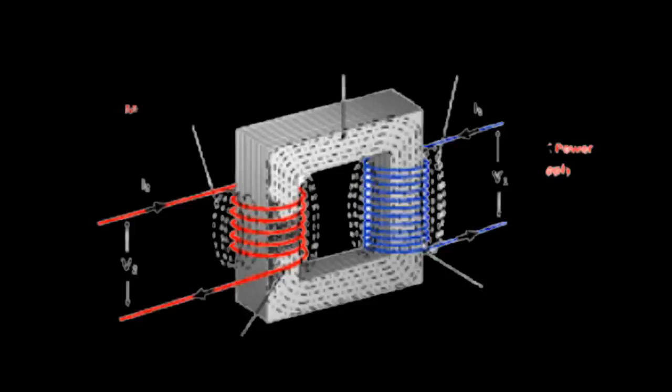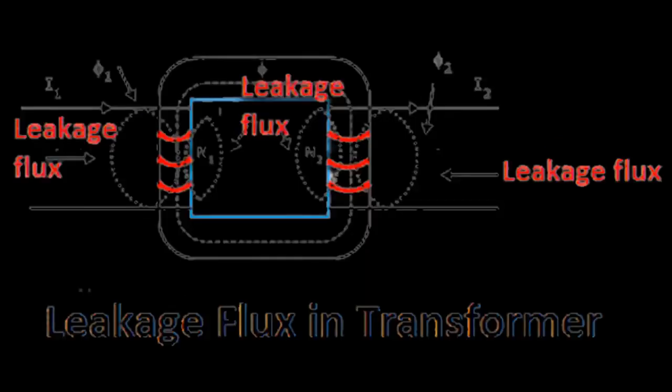While the flux that is not linked with the secondary winding is referred to as leakage flux. Due to alternating nature of flux produced, the direction of which is constantly changing, EMF is induced in the secondary winding via Faraday's law of electromagnetic induction.